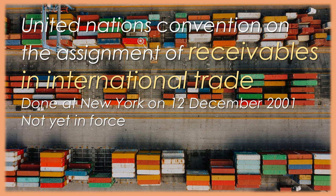Article 29. Law applicable to the rights and obligations of the assignee and the debtor. The law governing the original contract determines the effectiveness of contractual limitations on assignment as between the assignee and the debtor, the relationship between the assignee and the debtor, the conditions under which the assignment can be invoked against the debtor and whether the debtor's obligations have been discharged. Article 30. Law applicable to Priority. 1. The law of the state in which the assigner is located governs the priority of the right of an assignee in the assigned receivable over the right of a competing claimant. 2. The rules of the law of either the forum state or any other state that are mandatory irrespective of the law otherwise applicable may not prevent the application of a provision of the law of the state in which the assigner is located.